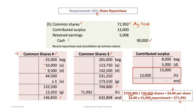We credit cash for $90,000, and debit contributed surplus for $13,000 — the existing balance made up of $8,000 to begin with plus $5,000 added from the forfeited share subscriptions. Since the company is paying $90,000 to repurchase shares with an average book value of $71,992, we must first use up any existing contributed surplus balance. After applying the full $13,000, the remaining amount is debited to retained earnings.